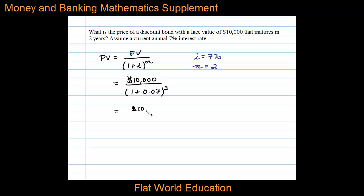Simplifying for the calculation, we have $10,000 divided by 1.07 squared. On a calculator, that comes out to $8,734.39.